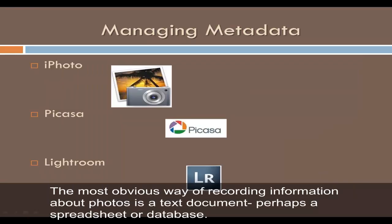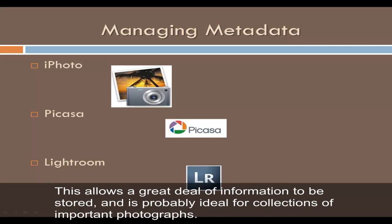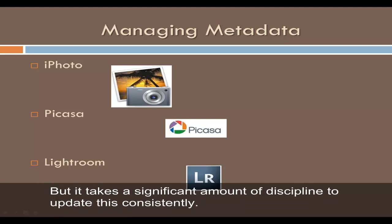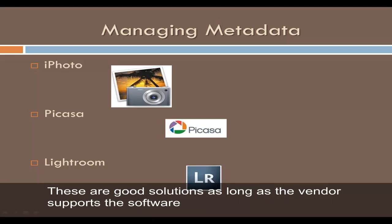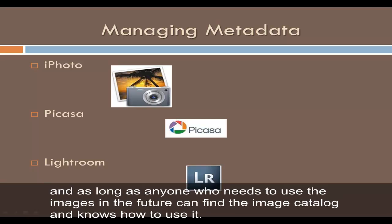The most obvious way of recording information about photos is a text document, perhaps a spreadsheet or database. This allows a great deal of information to be stored and is probably ideal for collections of important photographs, but it takes a significant amount of discipline to update this consistently. Another option is to use software like iPhoto, Google's Picasa, or Adobe Lightroom to organize and manage your data. These are good solutions as long as the vendor supports the software and as long as anyone who needs to use the images in the future can find the image catalog and knows how to use it.